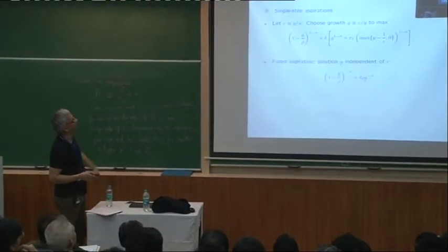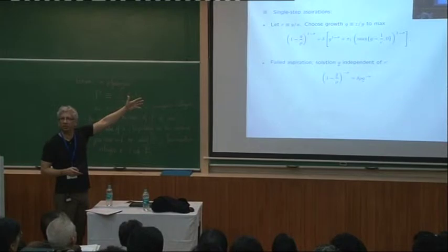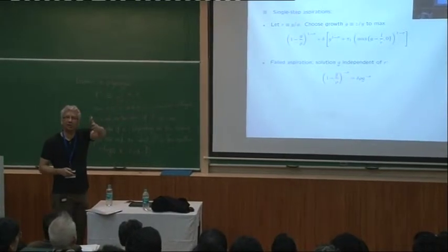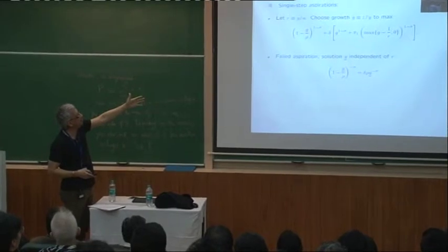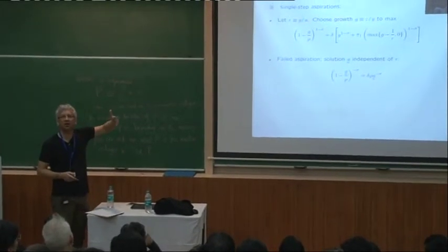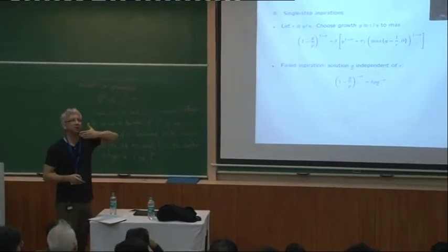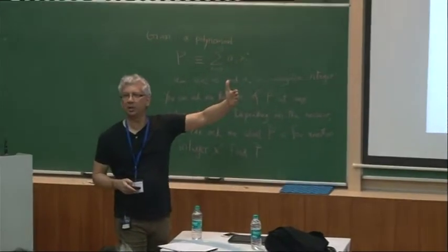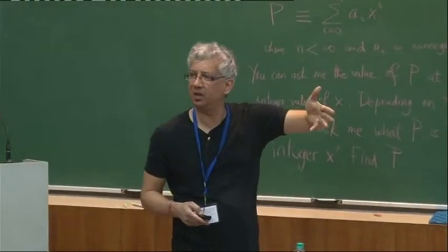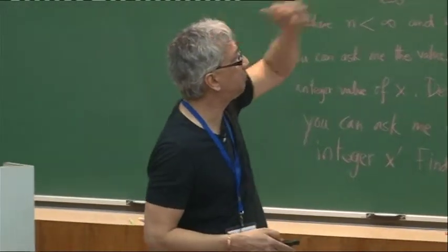So now I've set it up so that parents are choosing the growth rate of their incomes. What else is there to say? Nothing much except that you check two first order conditions, one to the left, one to the right, exactly the same story. So if you have a failed aspiration, then because this is just a standard linear model, you'll have a growth rate which is just independent of your aspiration level. It may be positive or negative. You may be decaying or increasing.